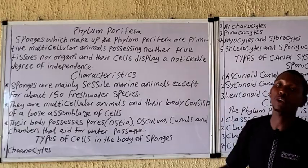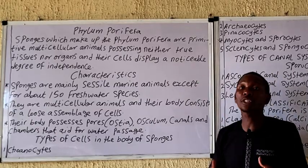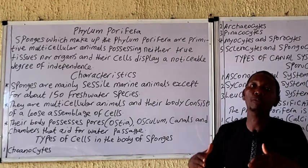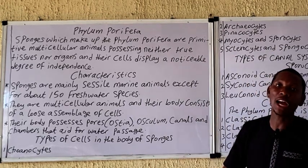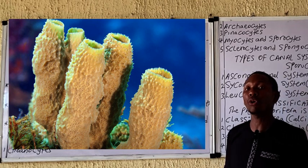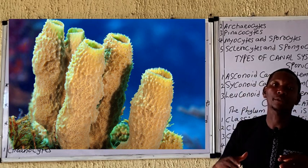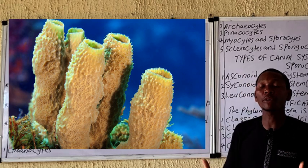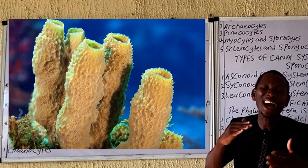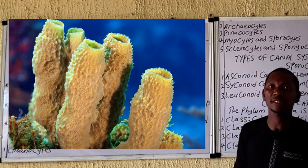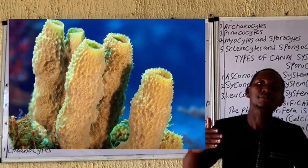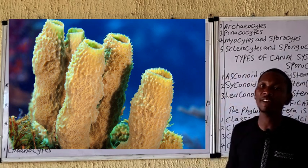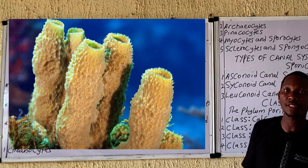The Phylum Porifera comprises organisms generally termed sponges. They are multicellular organisms that lack true tissue or organs. They possess a multitude of cells that have a certain degree of independence. This organism majorly inhabits the marine environment, with few freshwater species.